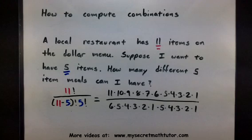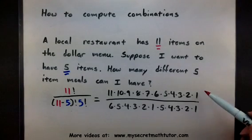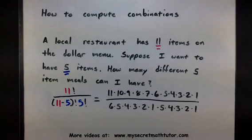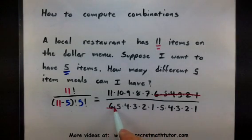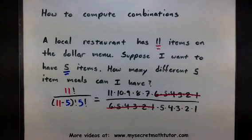Now when everything is expanded out like this, notice how there's lots of common terms in the top and bottom that you can get rid of by cancelling. Go ahead and do so. So, 6, 5, 4, 3, 2, 1 will cancel with 6, 5, 4, 3, 2, 1.